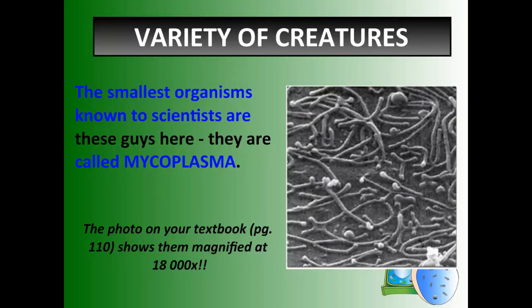For example, the smallest organisms known to scientists are something called mycoplasma. This image here — I probably made it a little bit larger, so it's hard to see exactly what the magnification is. But if you were to look at this image in your textbook as it's shown, the textbook page magnifies it by 18,000 times. That is massive. These mycoplasma are a single-celled organism, and they are alive.